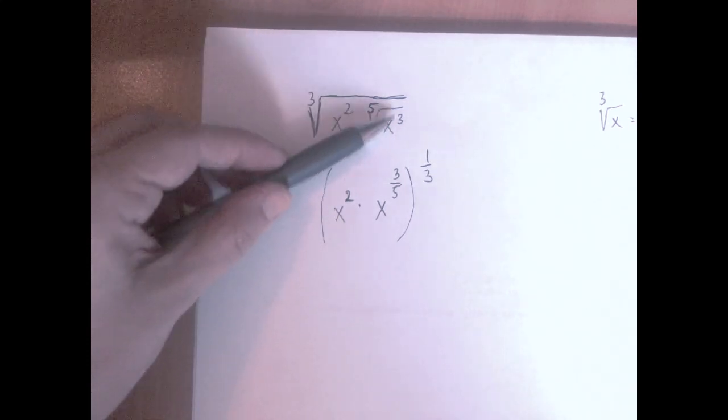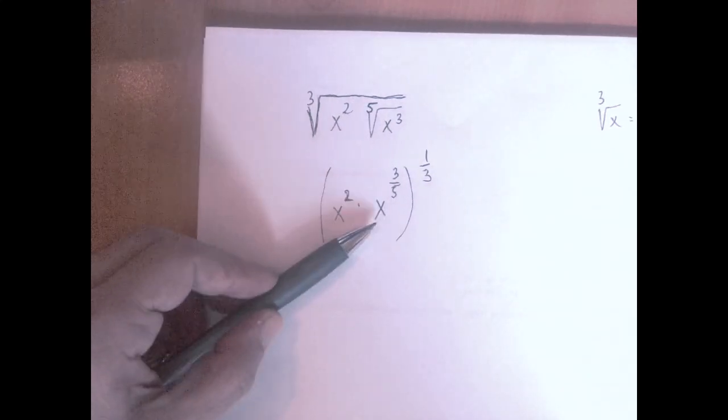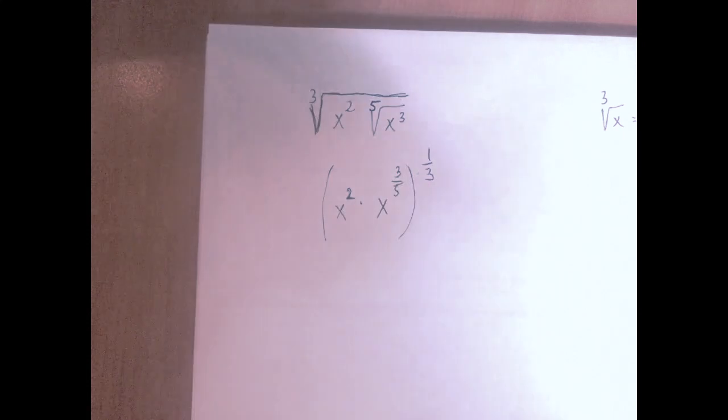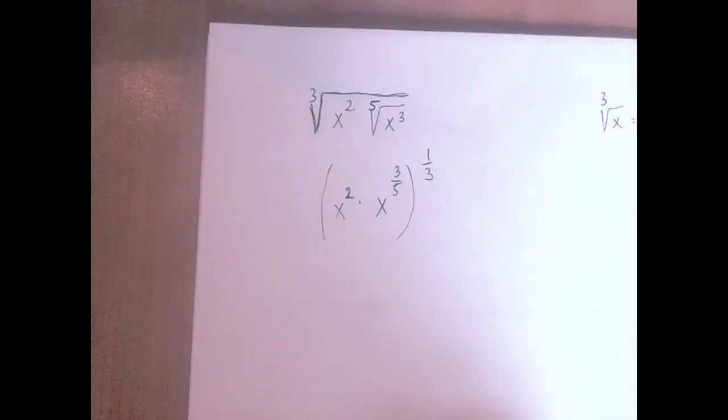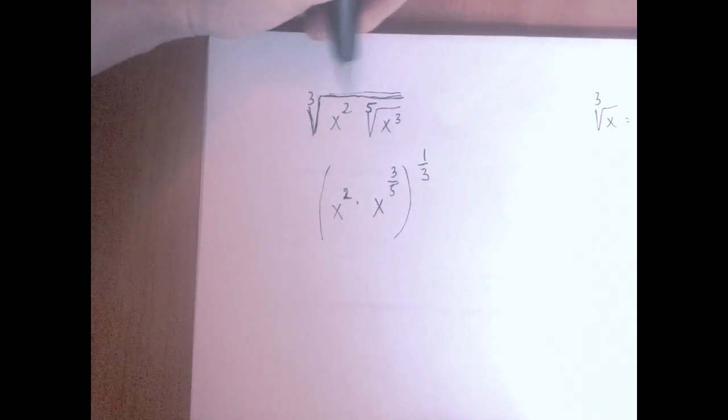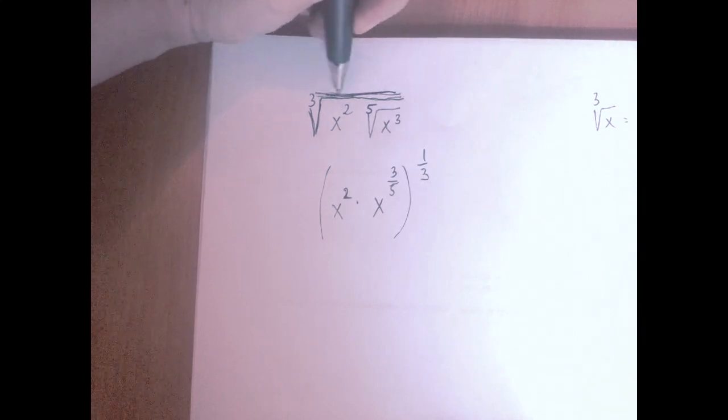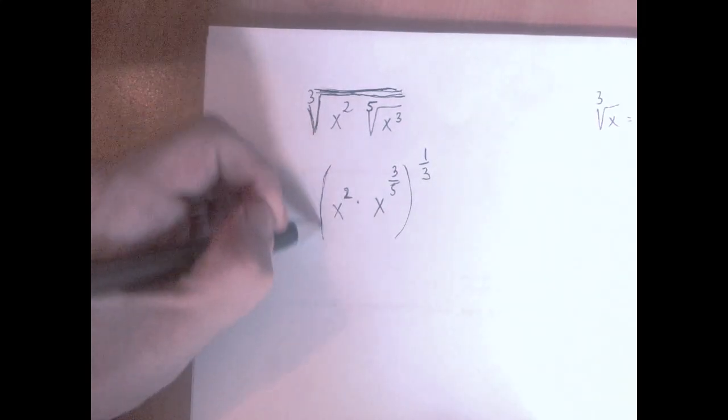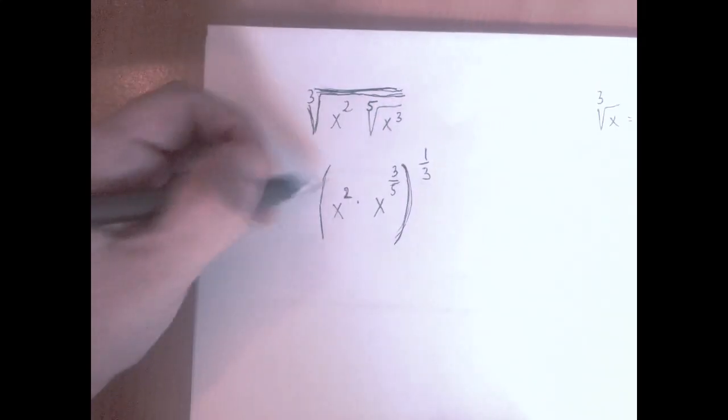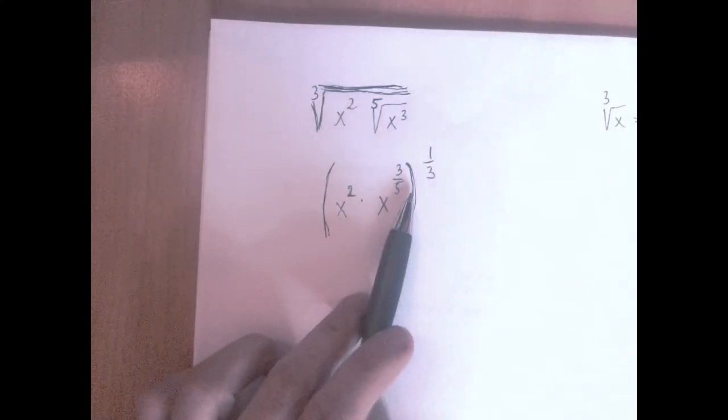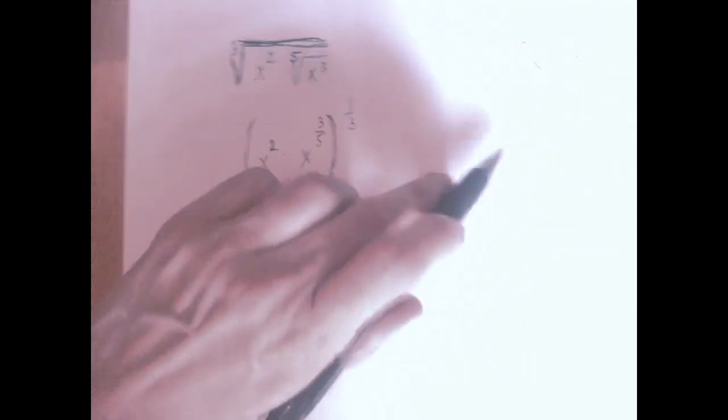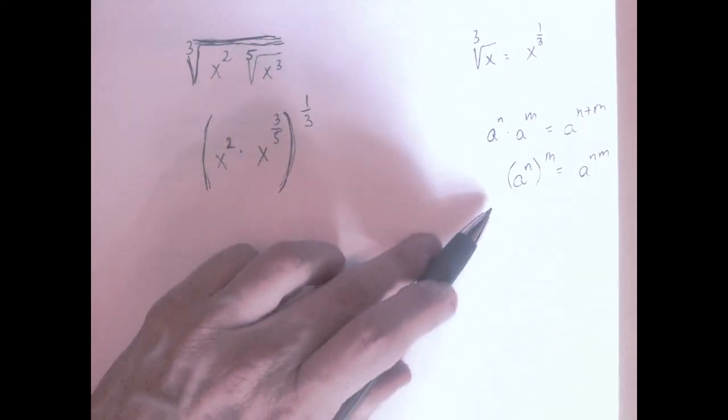x squared, 5th root of x cubed is 3 over 5, and 3rd root is another exponent of 1 over 3. And the fact that this radical sign stretches over this entire expression is what I call an invisible parenthesis. x squared. So we're just going to add the exponents and then multiply using the usual rules, first this rule and then this rule.